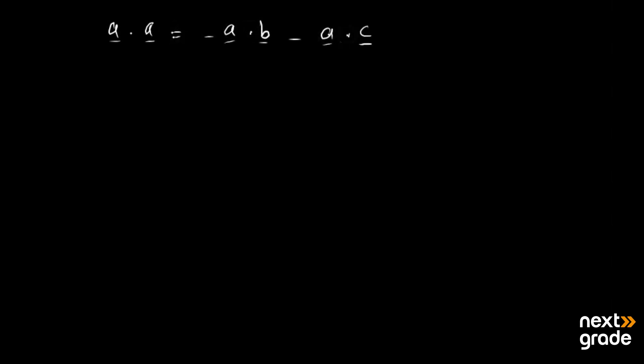دوبارہ لکھیں گے: a dot a = minus a dot b minus a dot c۔ Left side پر کوئی مسئلہ نہیں، لیکن اب ہمیں a اور b کے درمیان angle اور a اور c کے درمیان angle find کرنا پڑے گا۔